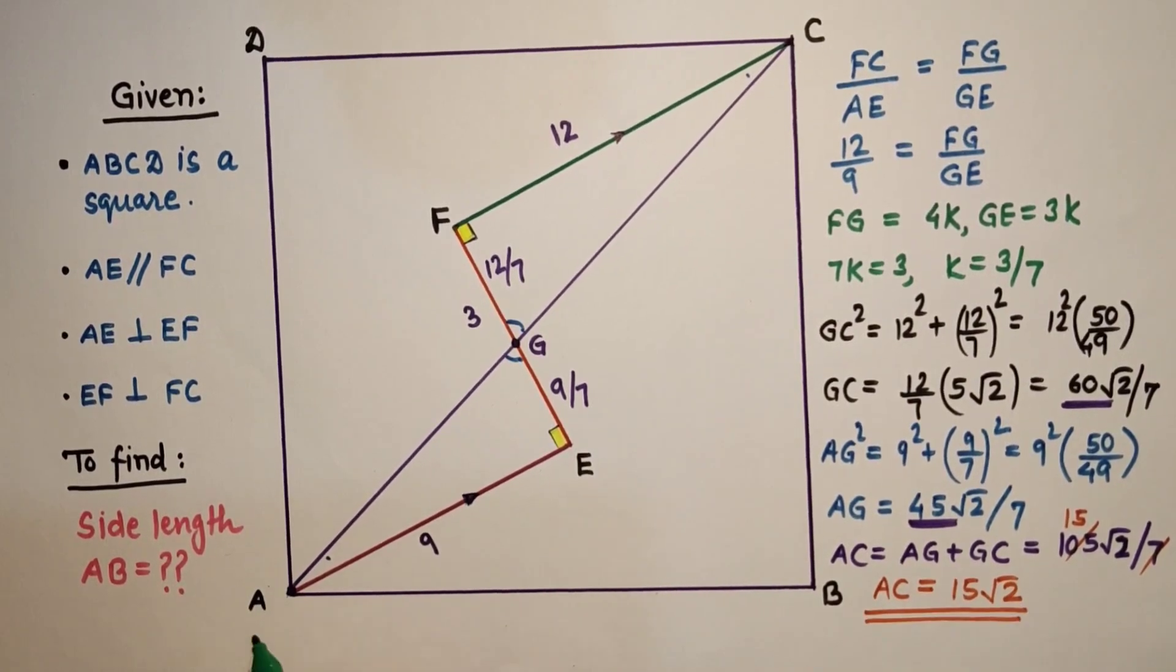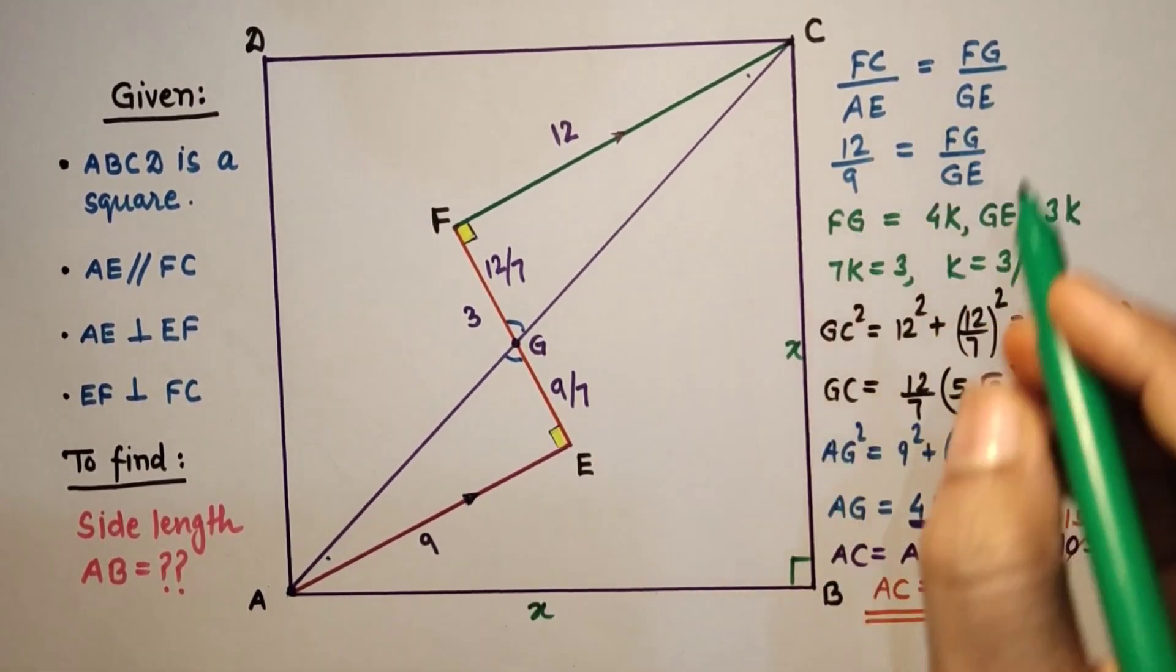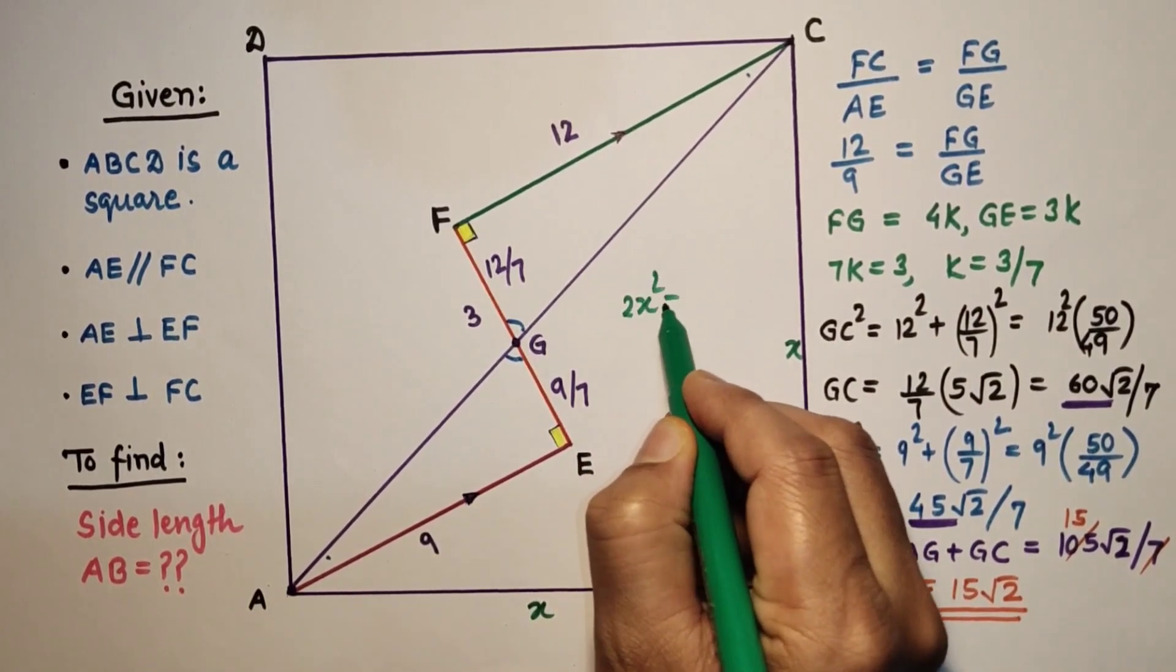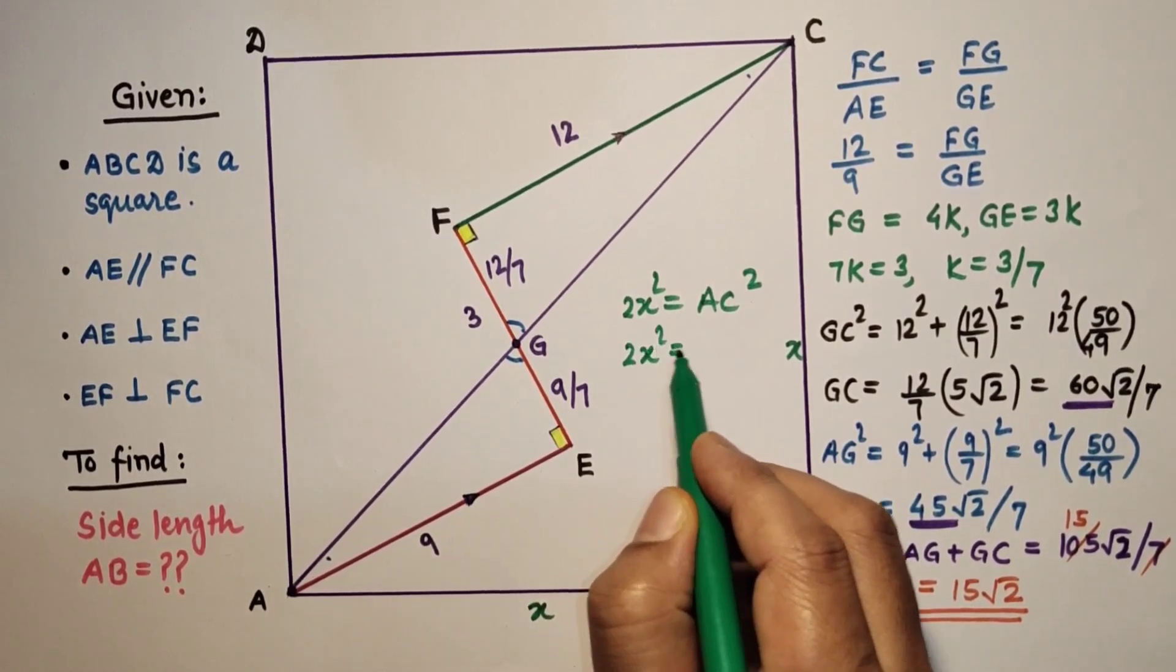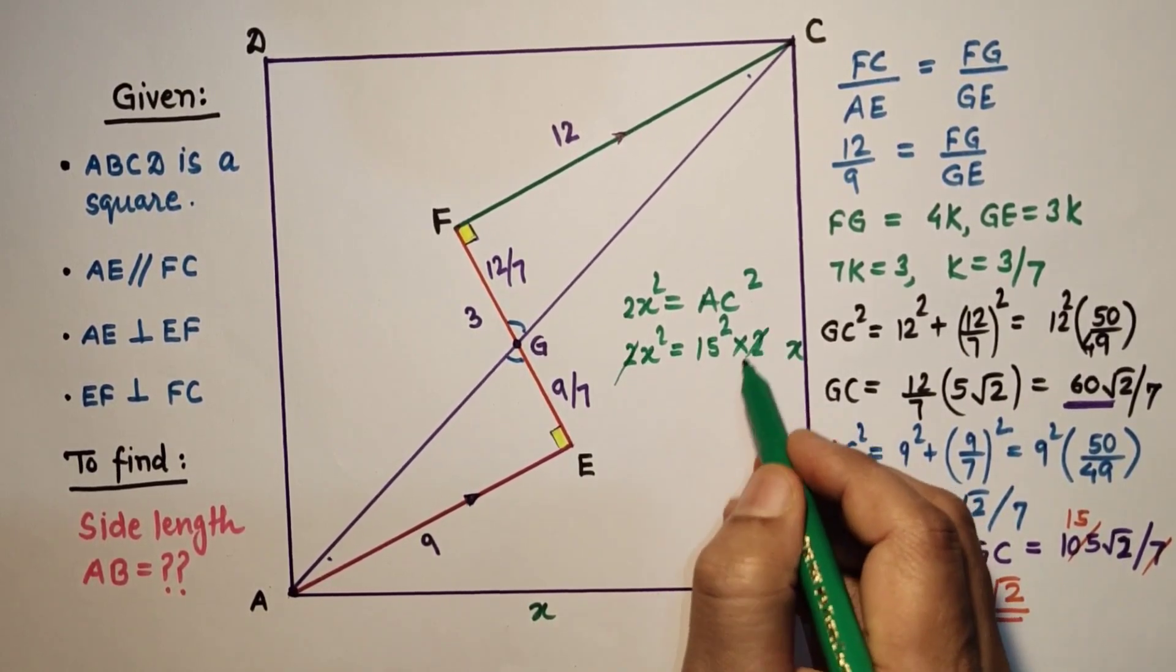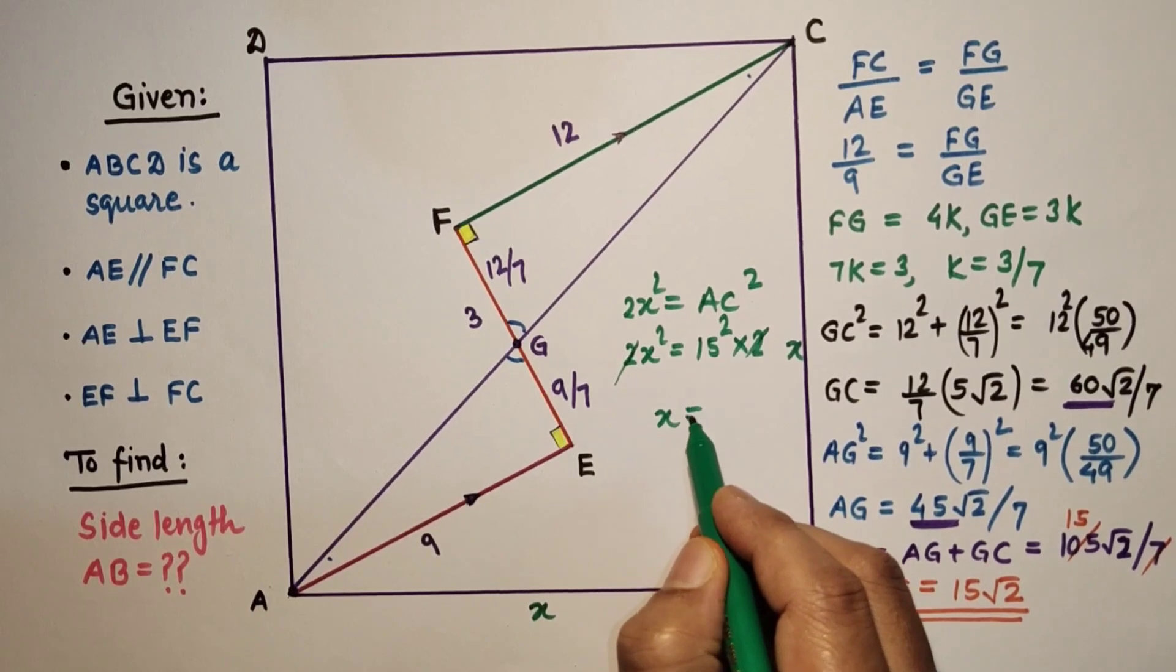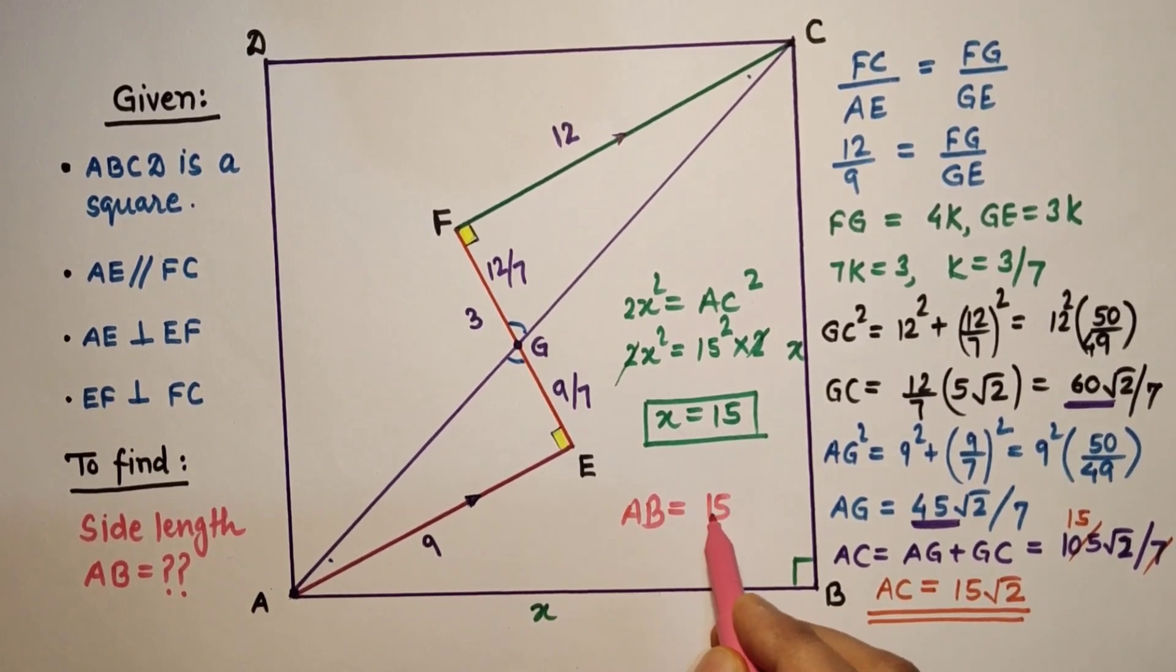Now diagonal we found 15 root 2. To get the side AB or BC, let us suppose this is X, so this will be X. This is 90 degrees, so X square plus X square is diagonal square. So 2X square is equal to AC square. So 2X square is equal to 15 square into root 2 square is 2, so 2 and 2 will get cut. X square is equal to 15 square, so X is equal to 15. We can say that length of the side of the square AB will be 15 units. That is the answer.